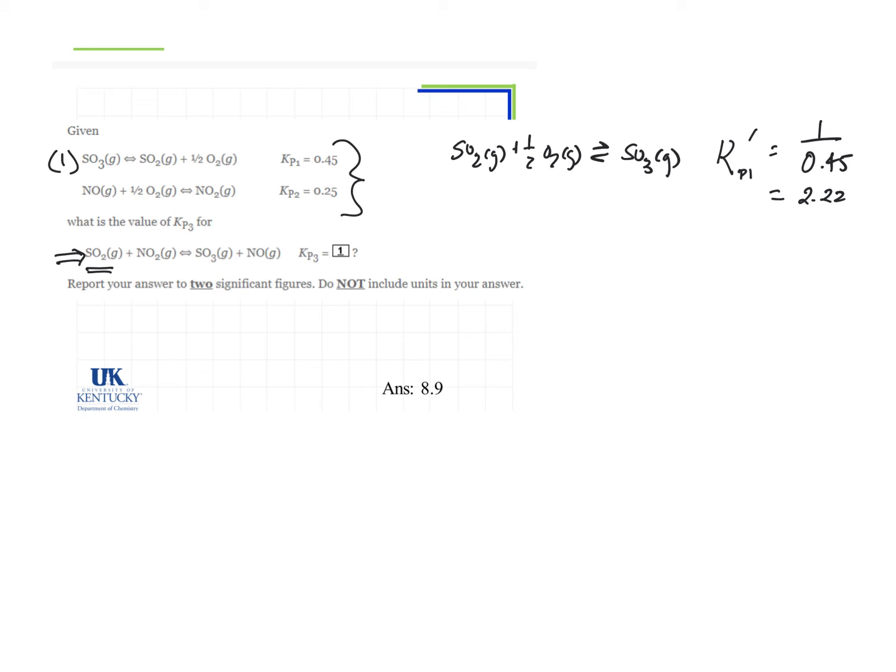Now the next component I need is NO2 in place. In reaction number two, NO2 is a product, so we're going to have to reverse this reaction.